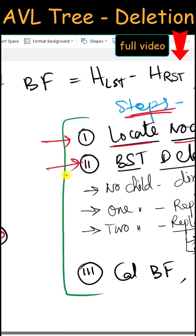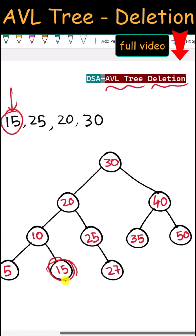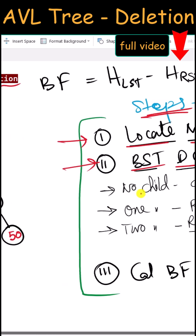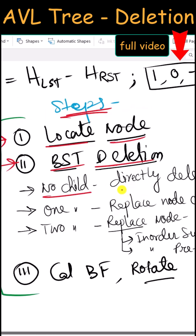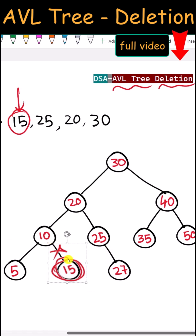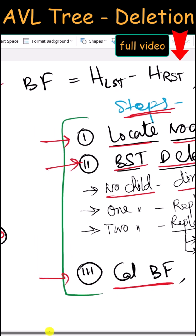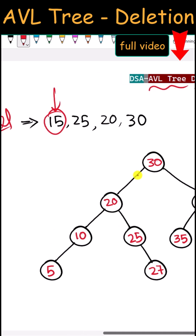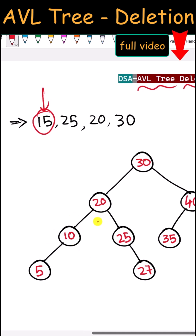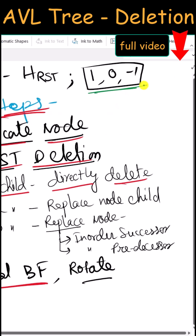Next we perform the standard BST deletion. The node we want to delete has no child, so we can directly delete it without any problem. After deletion, we calculate the balance factor for each node to check if the tree is balanced. All balance factors are within range, so no rotation is needed.